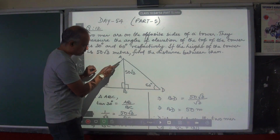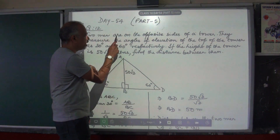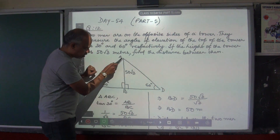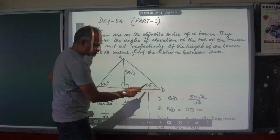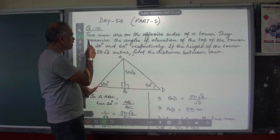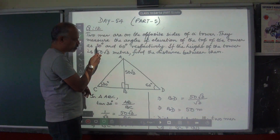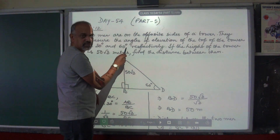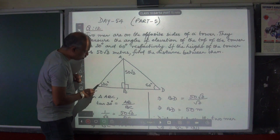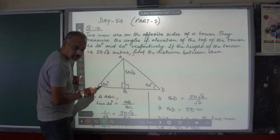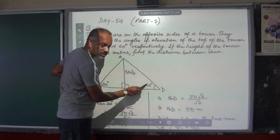The first thing you have to draw is the tower. AB is the tower and two men are on the opposite sides of the tower. One man is standing here at point C, the other one is standing at point D. The first one measures the angle of elevation as 30 degrees and the second one measures the angle as 60 degrees respectively. When the first person looks at the top of the tower, the angle of elevation is 30 degrees. When the second person looks at the top of the tower, the angle of elevation is 60 degrees.